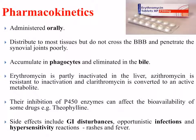In terms of pharmacokinetics, macrolides can be given as tablets orally. They distribute to most tissues but do not cross the blood-brain barrier, which may be advantageous in some cases but not others, and they penetrate the synovial joints poorly. They can accumulate in phagocytic cells of the immune system and can be eliminated by the bile. Erythromycin is partly inactivated in the liver, azithromycin is resistant to inactivation, and clarithromycin is converted to an active metabolite. Their inhibition of P450 enzymes can affect the bioavailability of some other drugs.